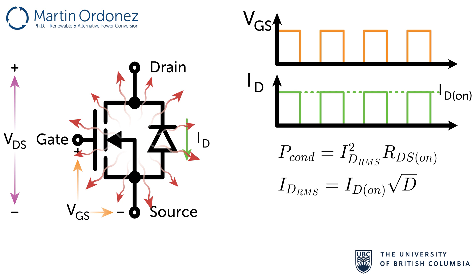Where ID_on is the current flowing through the device when it is on, conduction losses can be determined by ID_on squared times RDS_on times the duty cycle D.